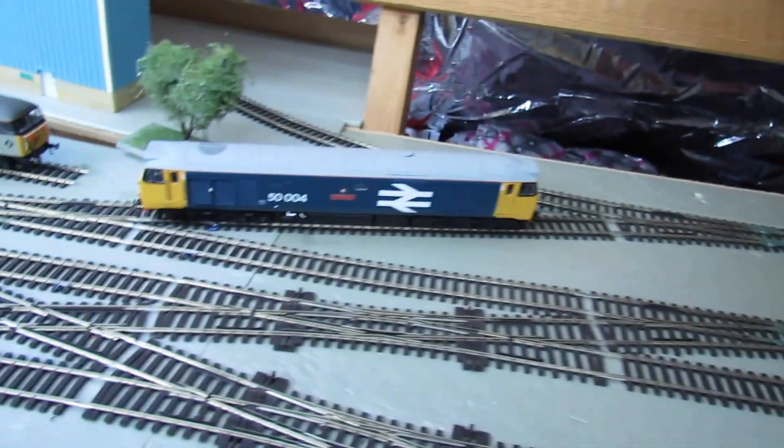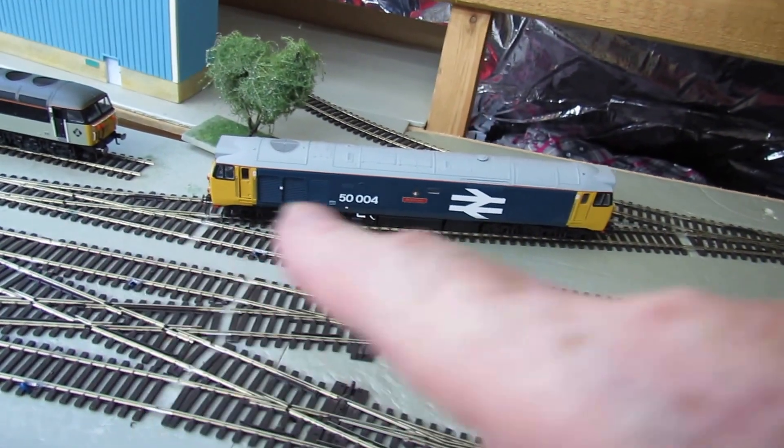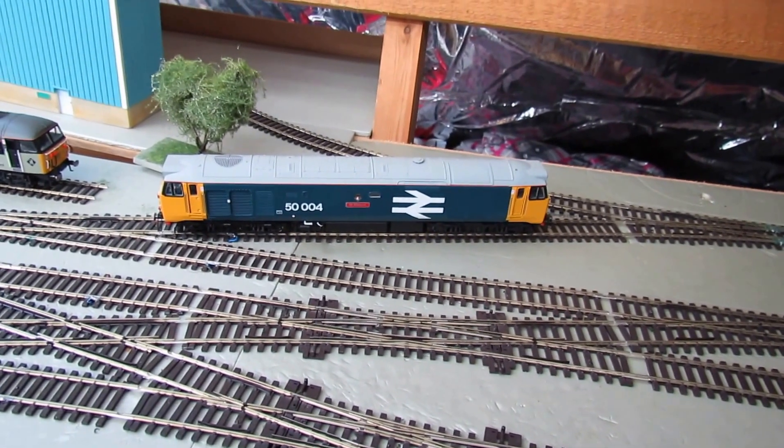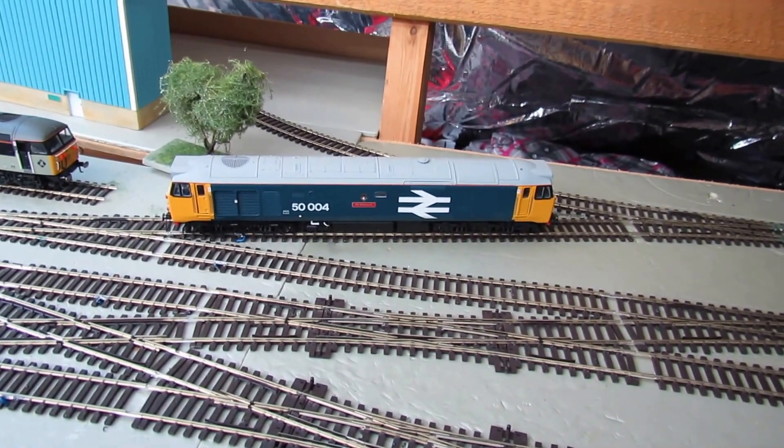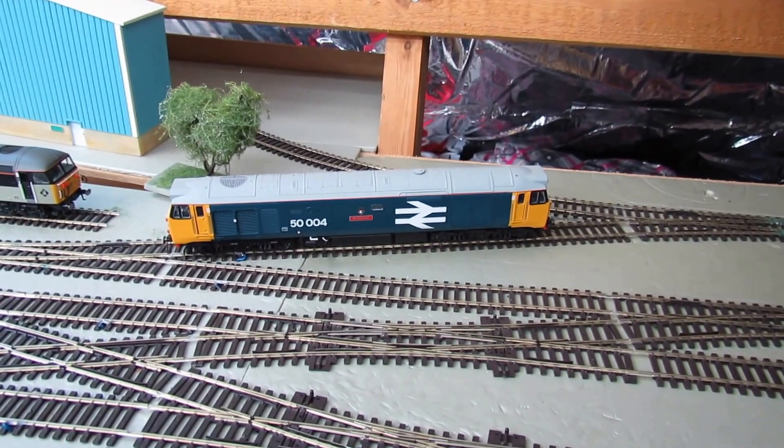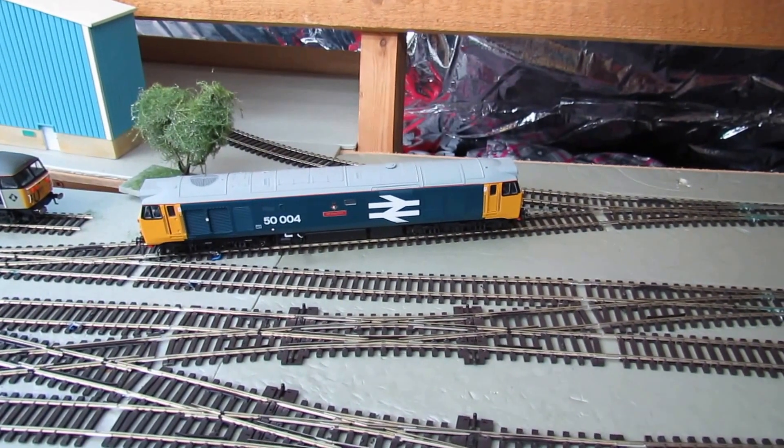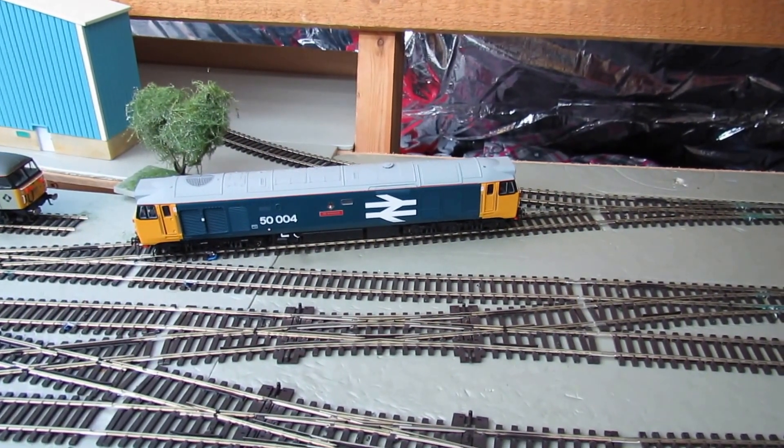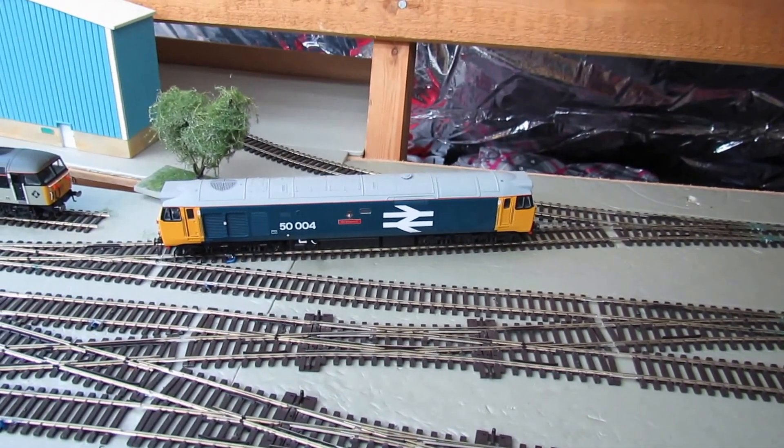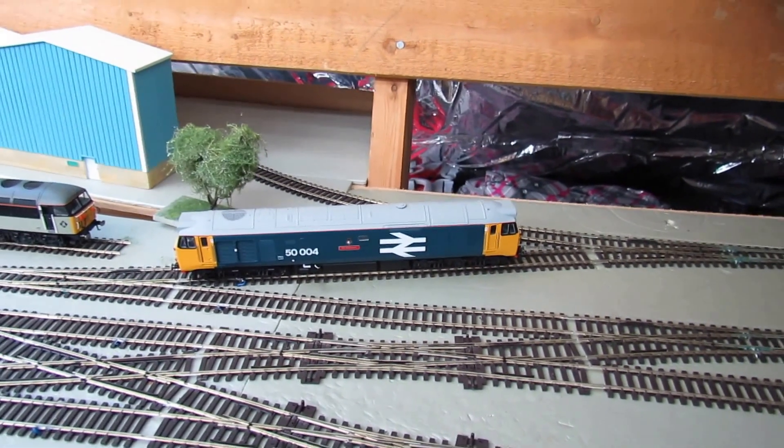What I have done is I've wired together two points that will always be changed together, which has allowed me to remove that single one that was underneath on its own. They both change okay together and even better, the polarity changes the correct way for both points.